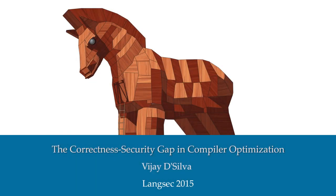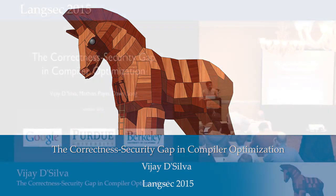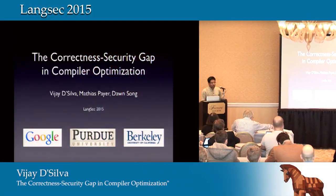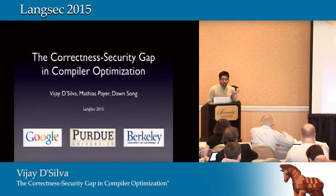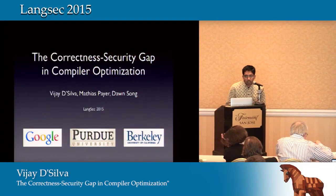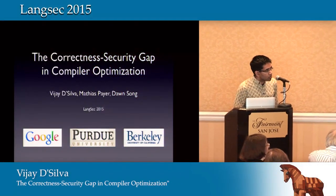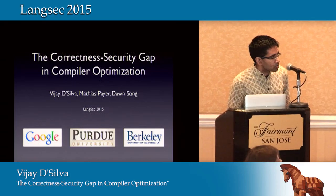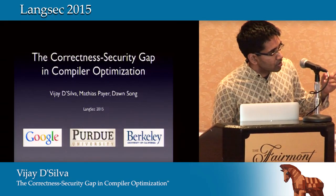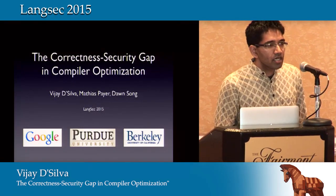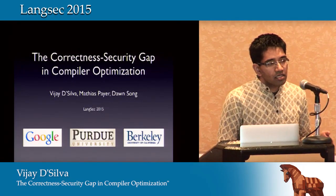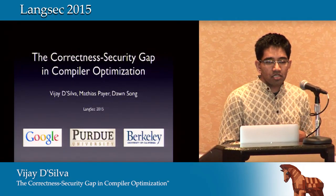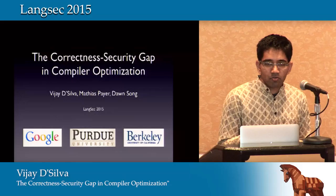I'm currently a software engineer at Google, and Matthias is an assistant professor at Purdue. This is work that we did in early 2013 when we were both postdocs of Don Song at UC Berkeley, and it came from a fairly simple observation.